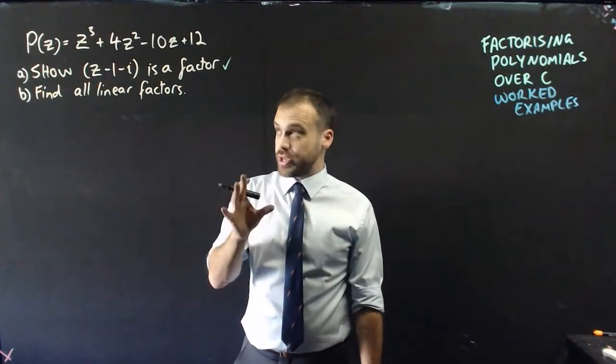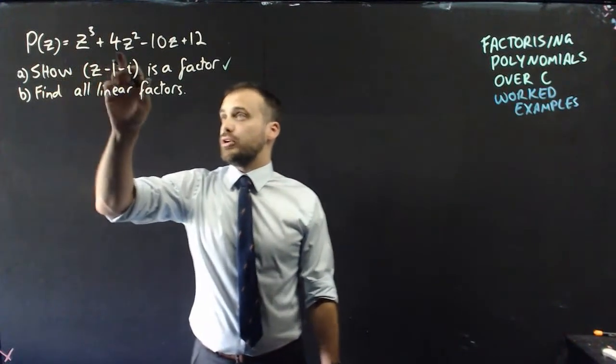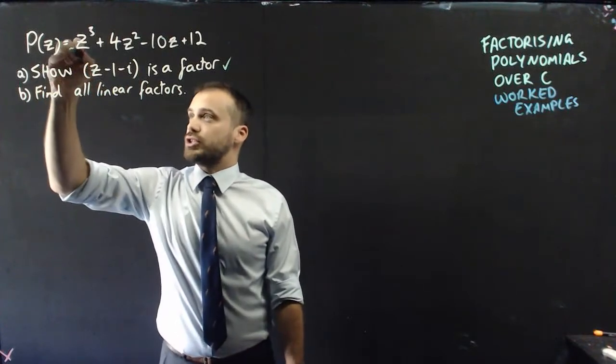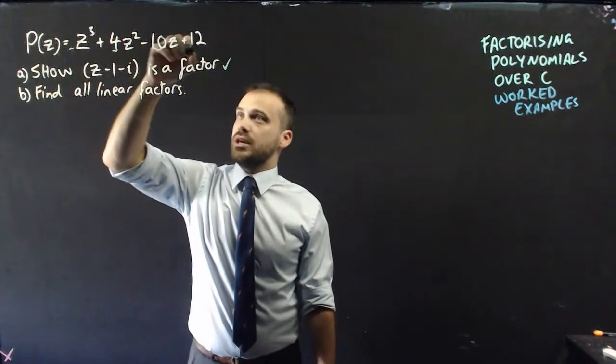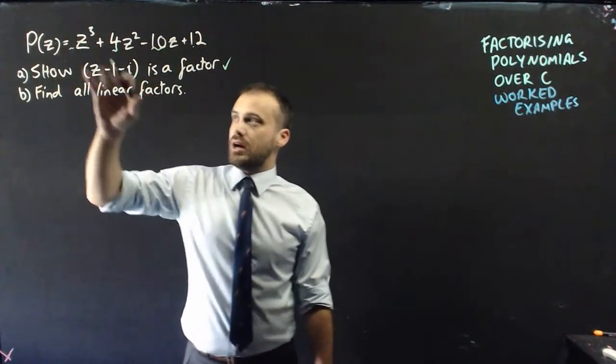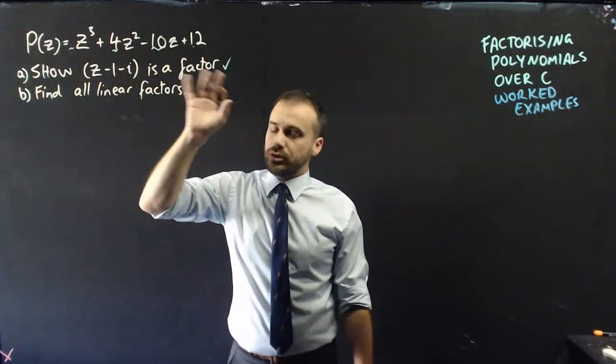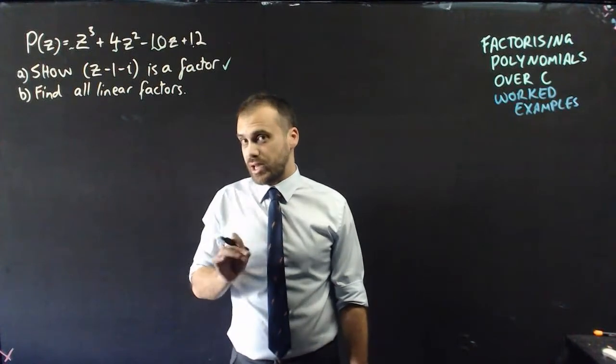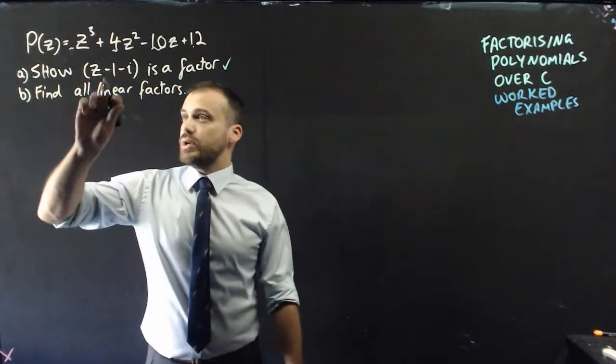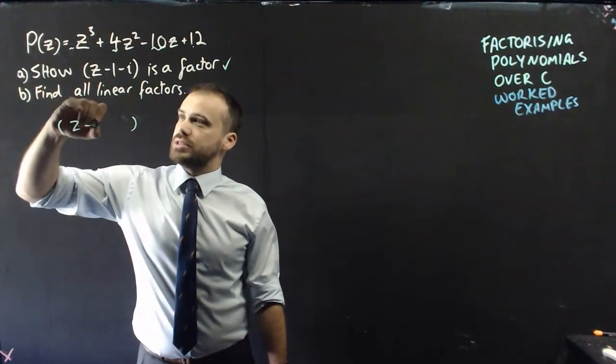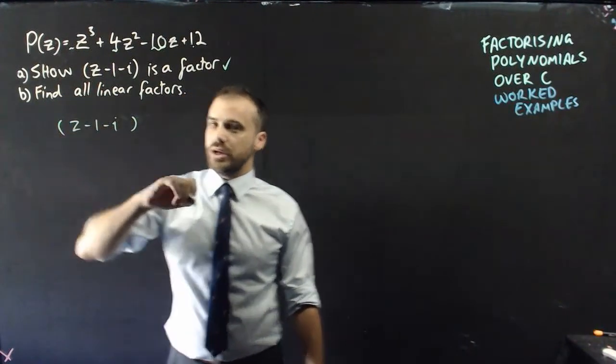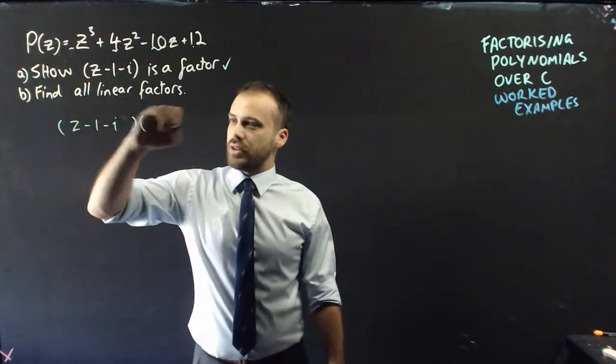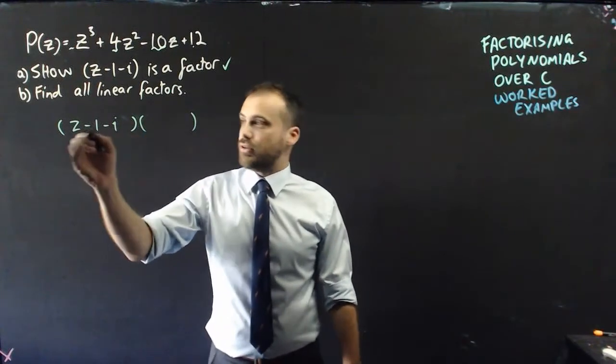Now, we get another factor for free, right? Look at our polynomial, real coefficient of 1, 4, negative 10, and positive 12 here. All of these real coefficients tell us that the conjugate root theorem is in play. We can use it. So if we have an imaginary factor of z minus 1 minus i, we're going to have another one that is the conjugate of that.